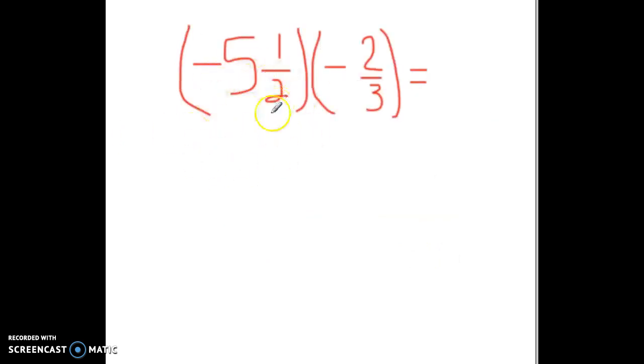Okay, and this one, remember I told you, when you see a mixed number, change it to an improper fraction. So let's do that. 5 times 2 is 10, plus the 1 on top is 11, so we have negative 11 halves. Then we're going to multiply it by negative 2 thirds. Remember this is multiplication, not subtraction.